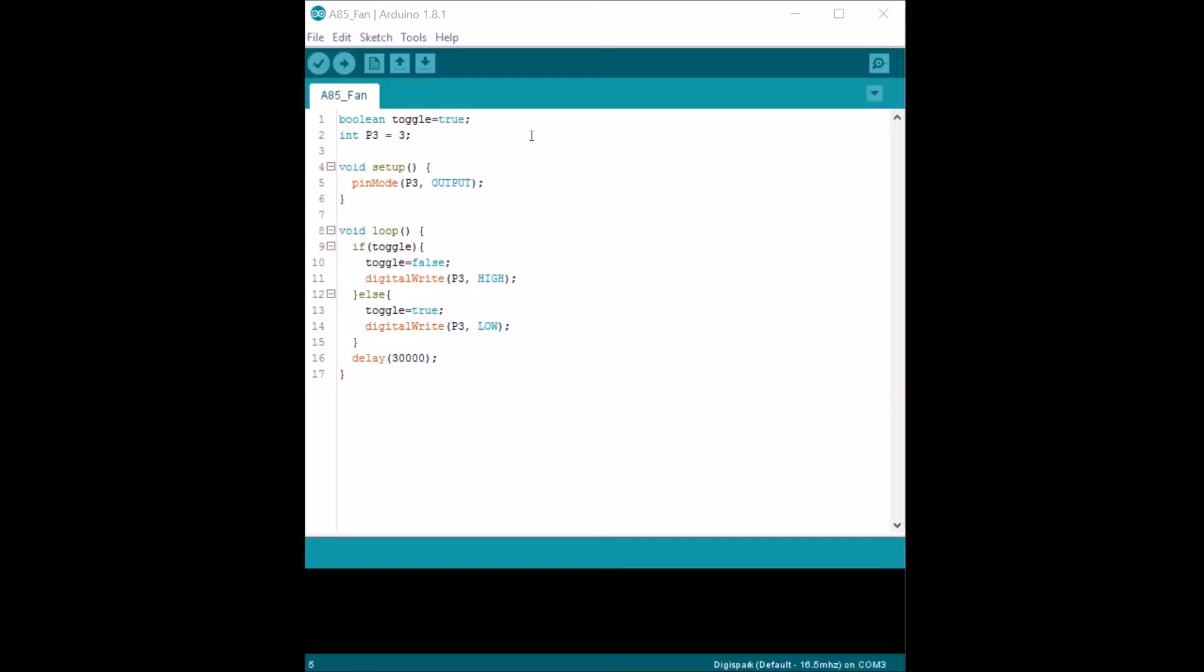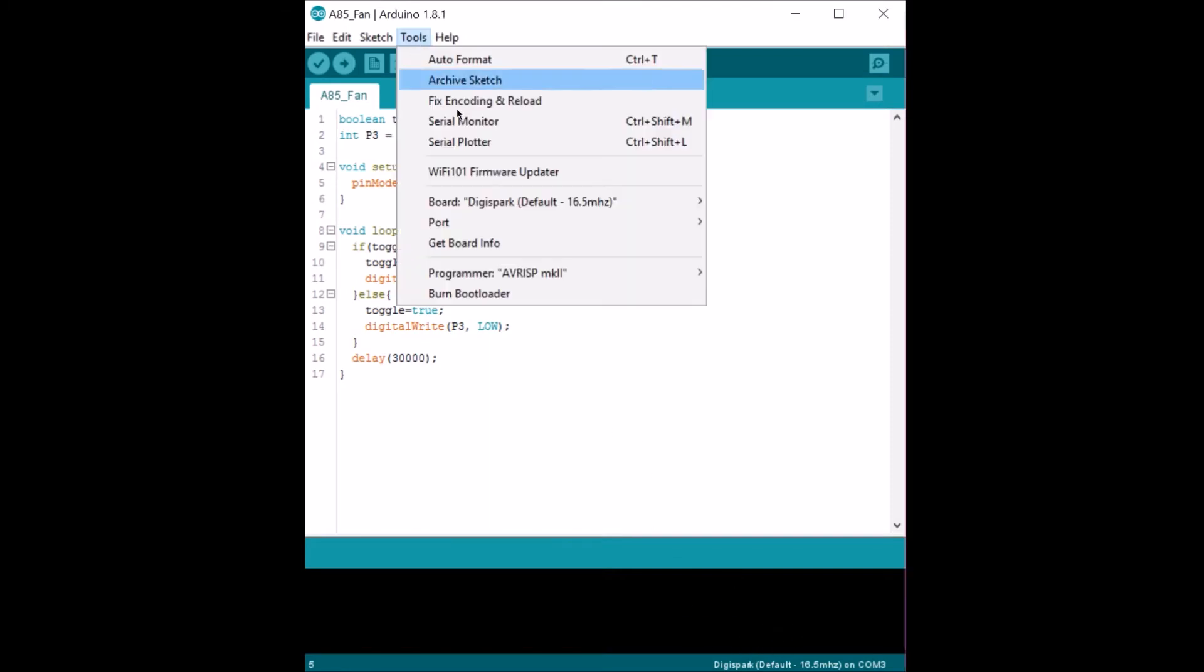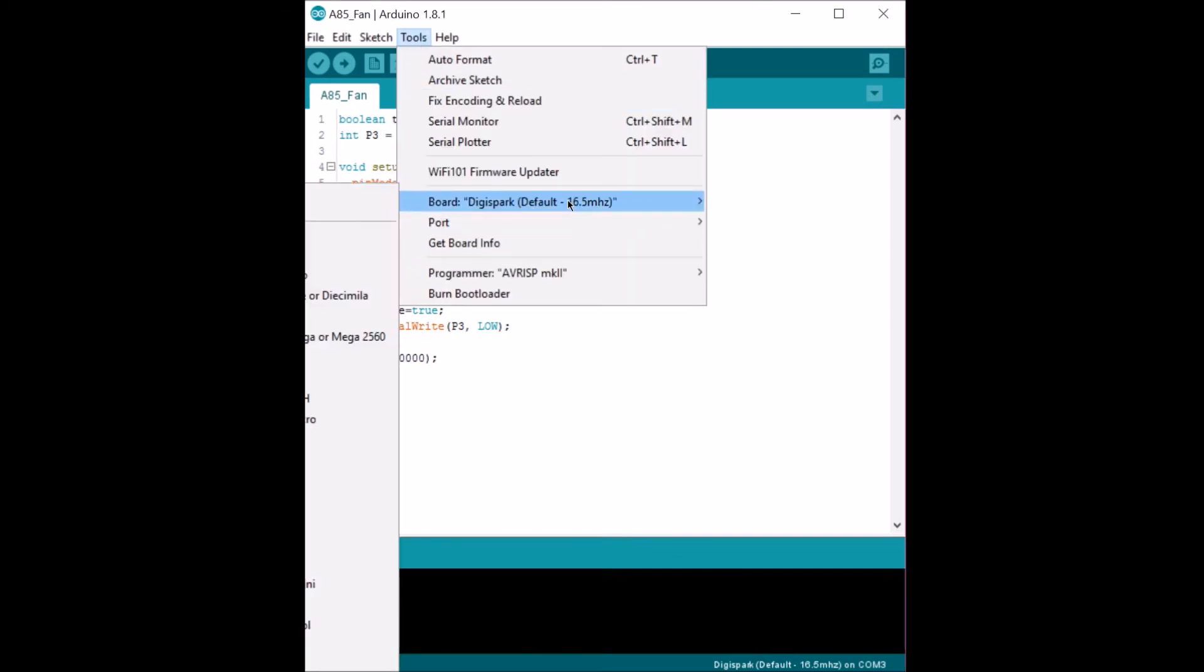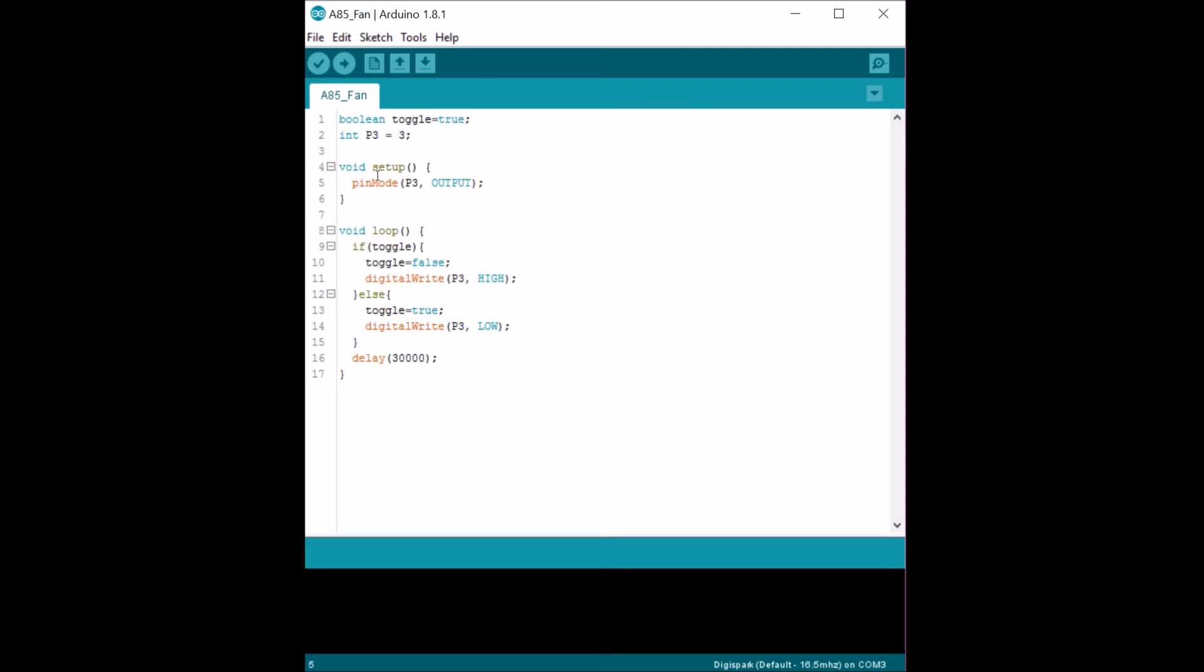Let's look at the Arduino code that we're going to use to program our ATtiny. In this case, we installed the boards as described on DigiSpark's website. We go and select the board. In our case, we're just going to use the default 16MHz board. So the code is very simple.